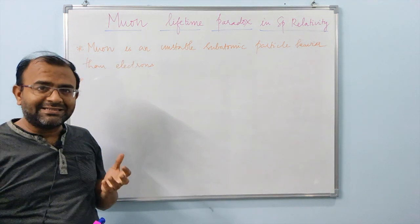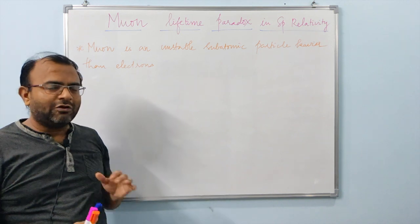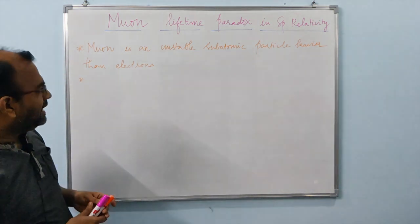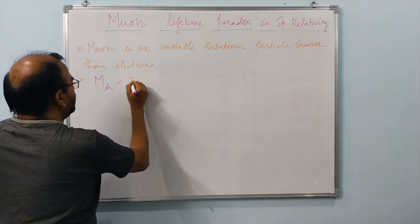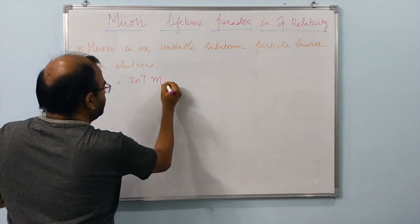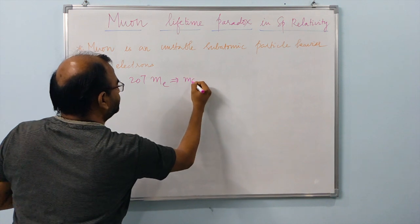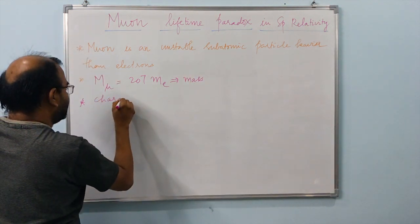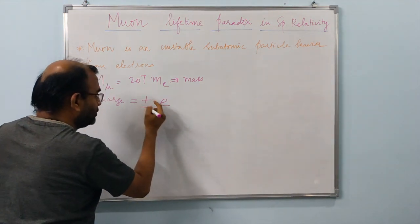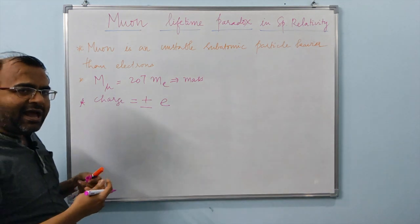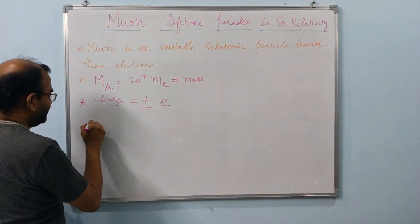What is a muon? A muon is nothing but a subatomic particle. It is an unstable particle — heavier than the electron but lighter than the proton and neutron. Its mass is about 207 times the mass of the electron, and its charge is equal to the charge of the electron or the positron, so plus or minus e.